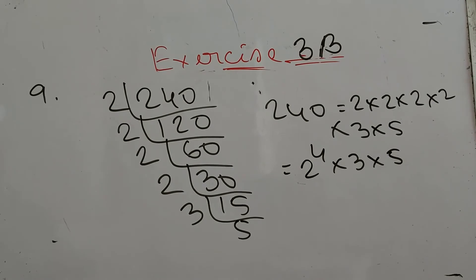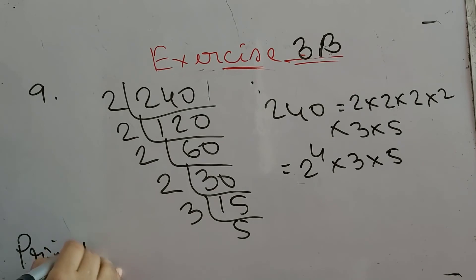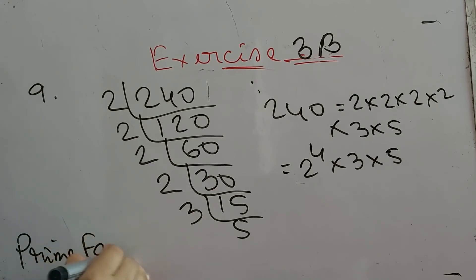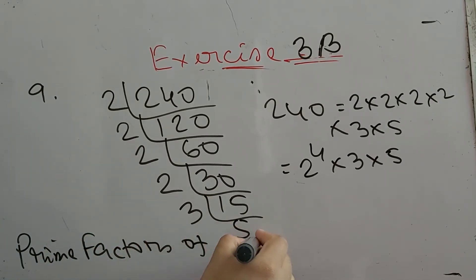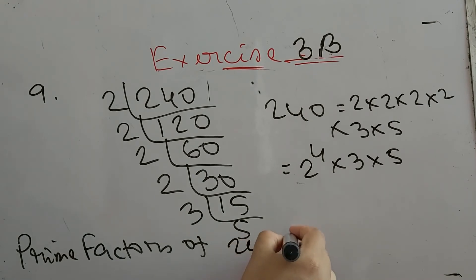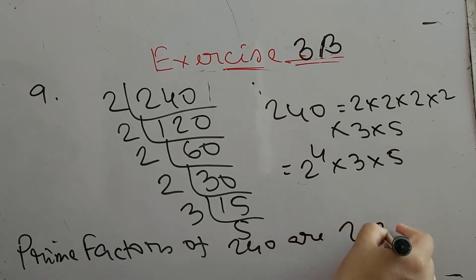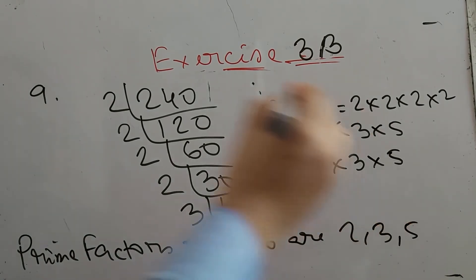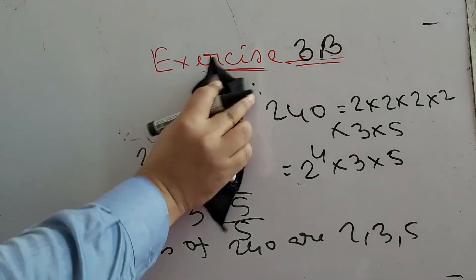So we can say the prime factors of 240 are 2, 3, and 5. Very much simple one.